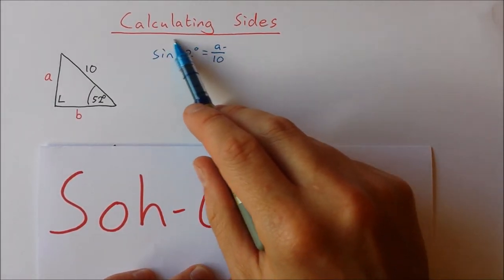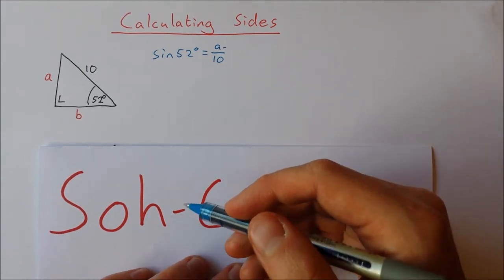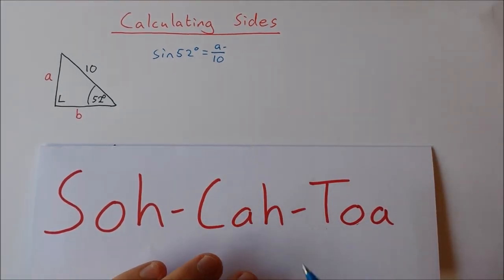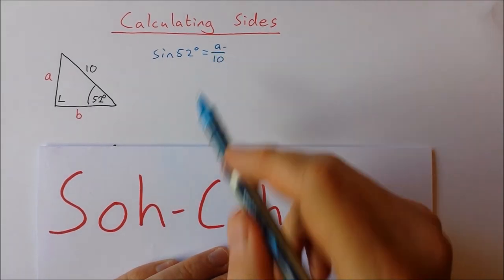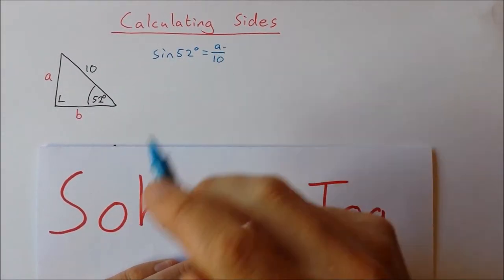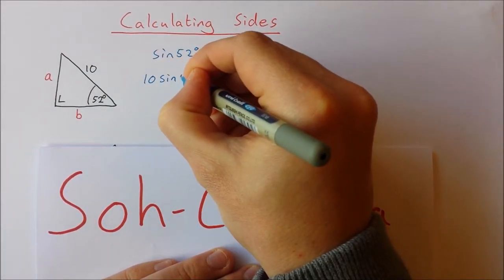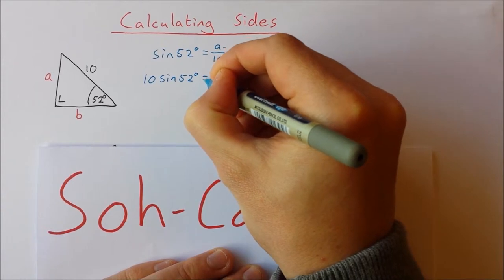Whatever you do, don't calculate sine 52 just yet. There's no point in doing it just yet. What's better to do is a little bit of algebra and isolate 'a'. So I'm going to multiply both sides by 10, and that will isolate 'a'. So 10 sin(52°) = a.